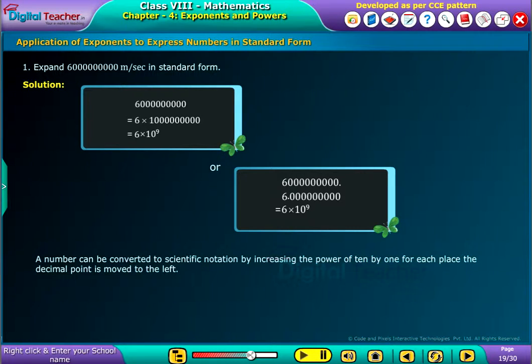A number can be converted to scientific notation by increasing the power of 10 by 1 for each place the decimal point is moved to the left.